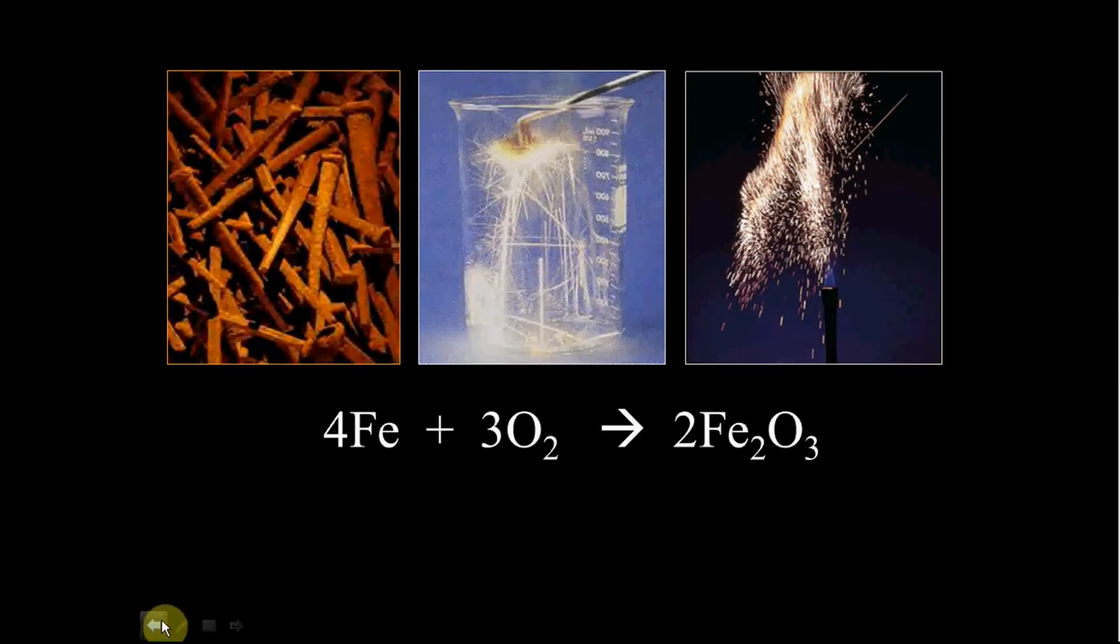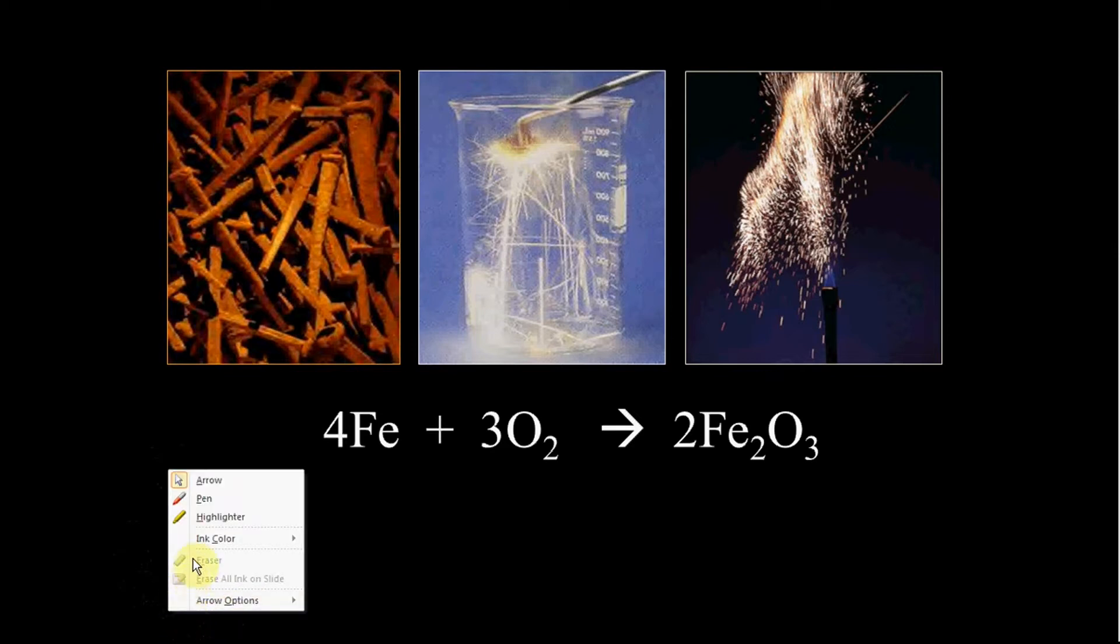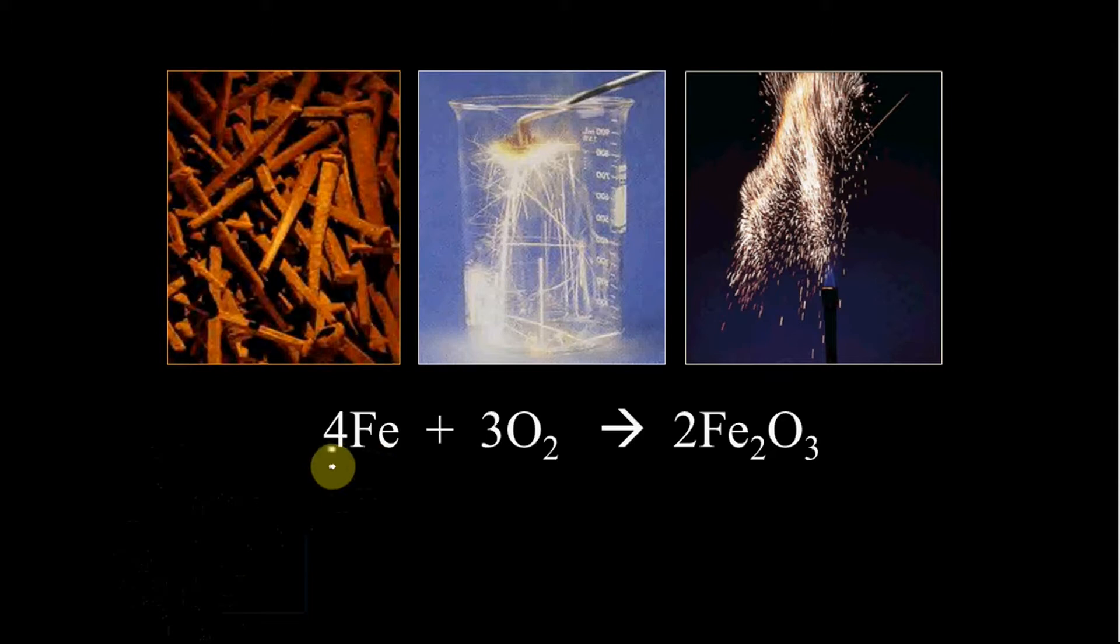If you were to look at this reaction between iron and oxygen, and you looked at the basic chemistry, Fe plus O2 yields Fe2O3, the equation here describes all three scenarios that you see above, but certainly the rates of these reactions would be very different. You had a large piece of iron that slowly, over time, began to rust.